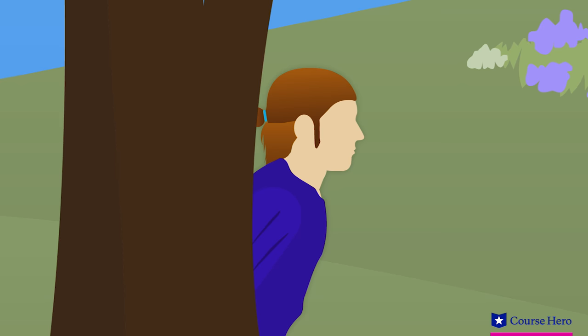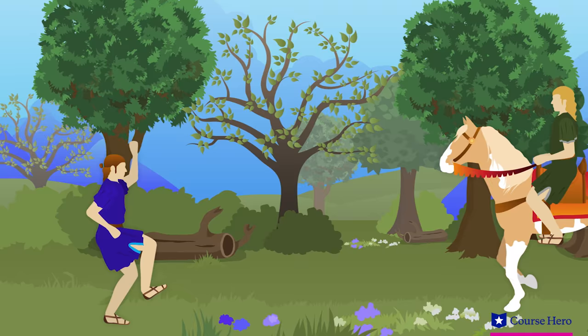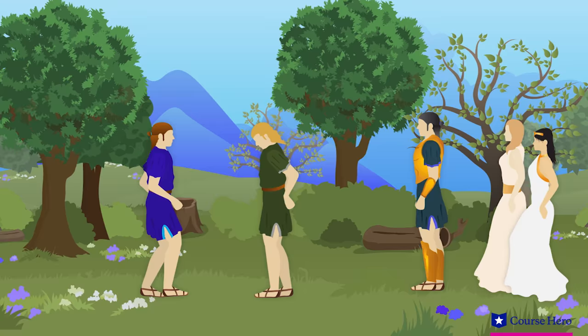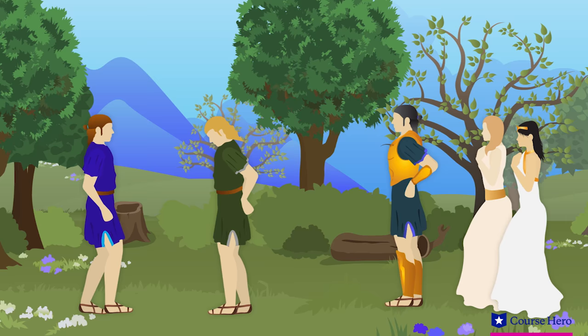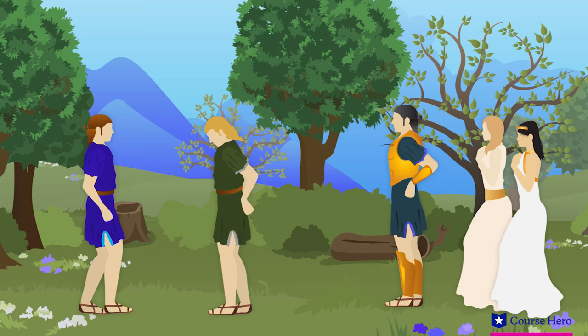Arcite goes for a ride in the woods. Palamon is hiding there, recognizes Arcite, and he bursts out and challenges him to a duel. Meanwhile, Theseus decides to go hunting with Hippolyta and Emily. He rides into the woods and comes upon the men. He breaks up their fight. Palamon reveals who he is and says the servant is really Arcite. The women beg Theseus to have mercy.